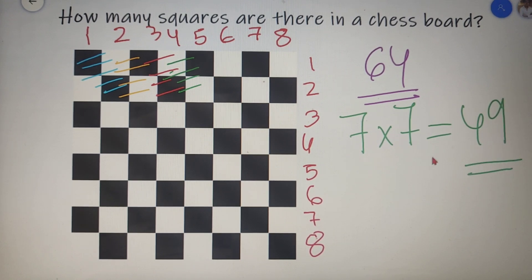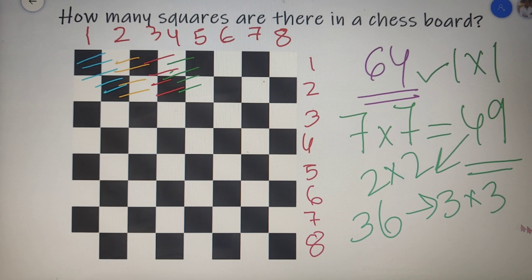Now you may have noticed a pattern over here too. If I have got 64 squares of size 1 cross 1, 49 squares of size 2 cross 2, then I can say that I will get 36 squares of size 3 cross 3. Now you may think that how did I get 36 as the value? So the answer is that for 1 cross 1, we got 64 squares. That is 8 square. For 2 cross 2, we got 49 squares. That is 7 square.